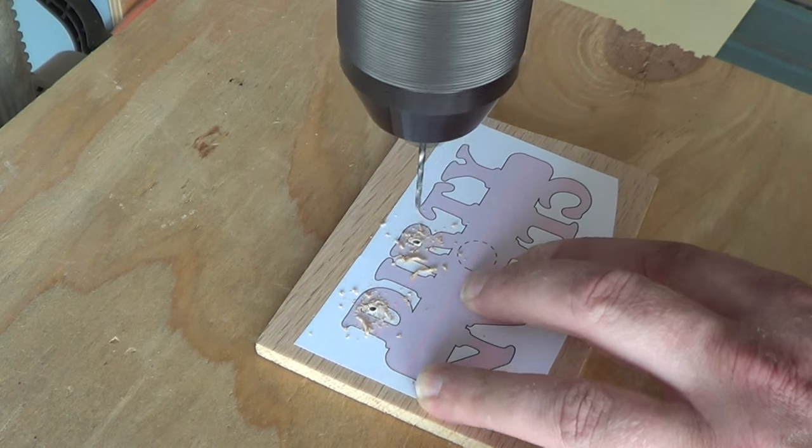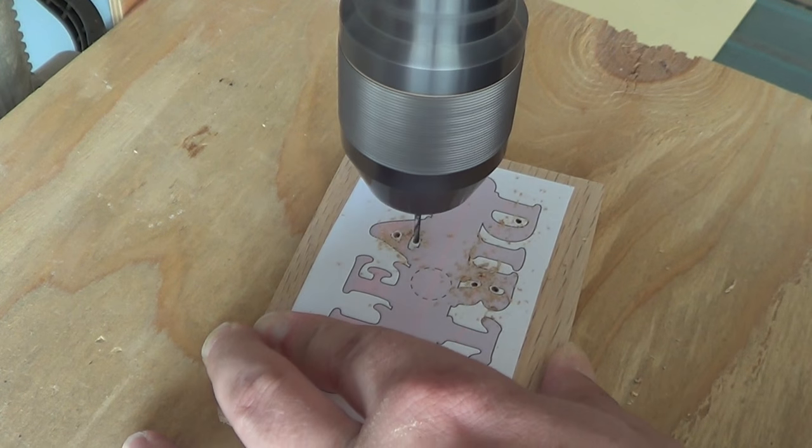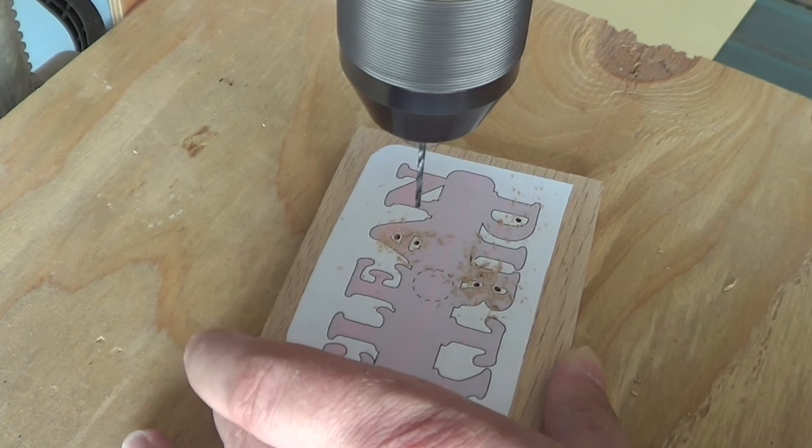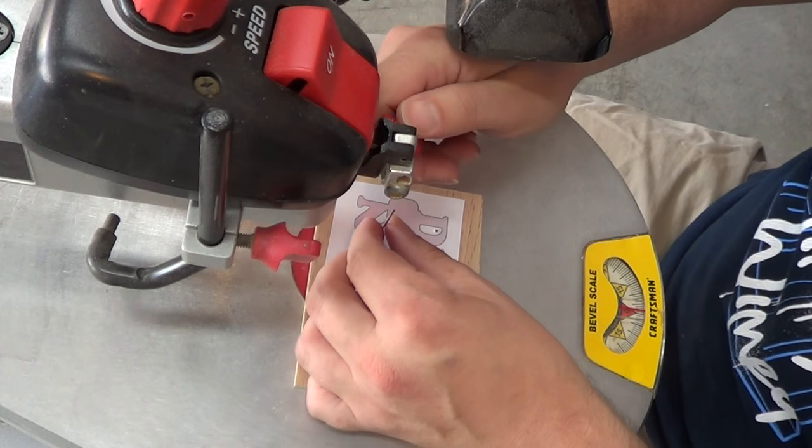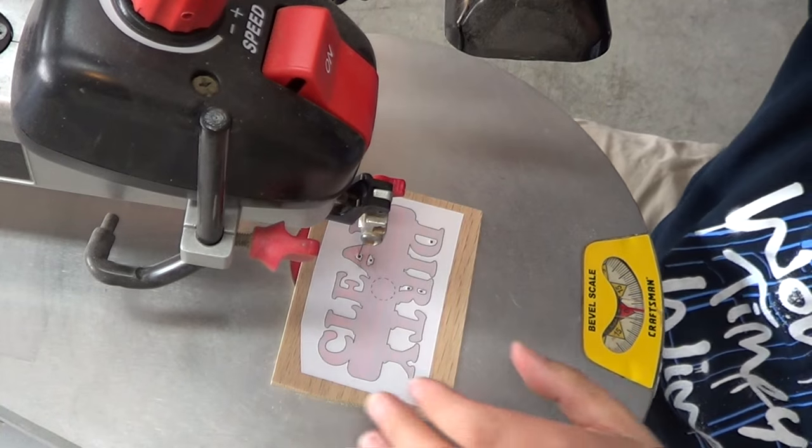And then I'm going to drill out the entry holes. I thread the blade through each one of the centers and I'm going to do the inside of the letters first. Get that kind of out of the way.